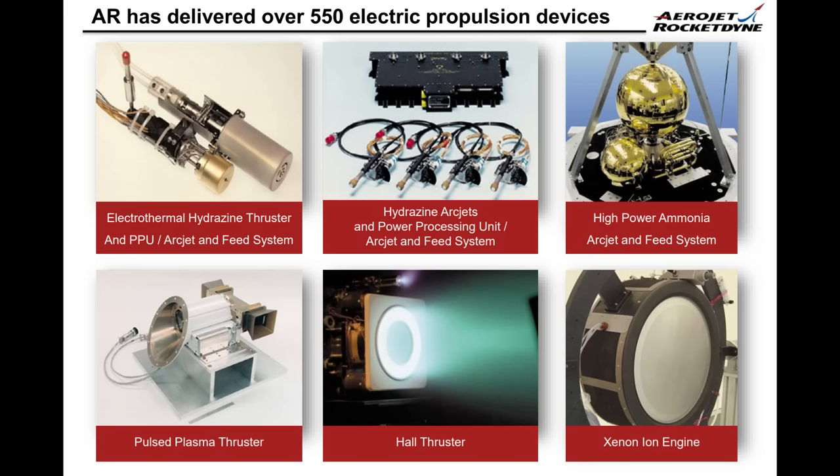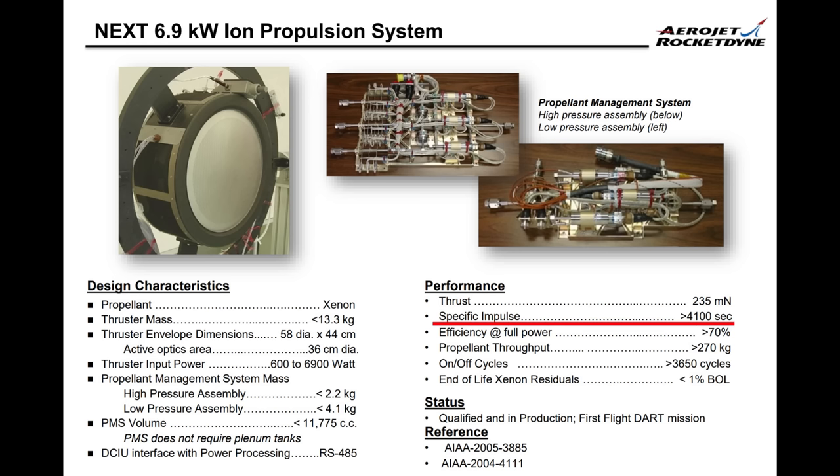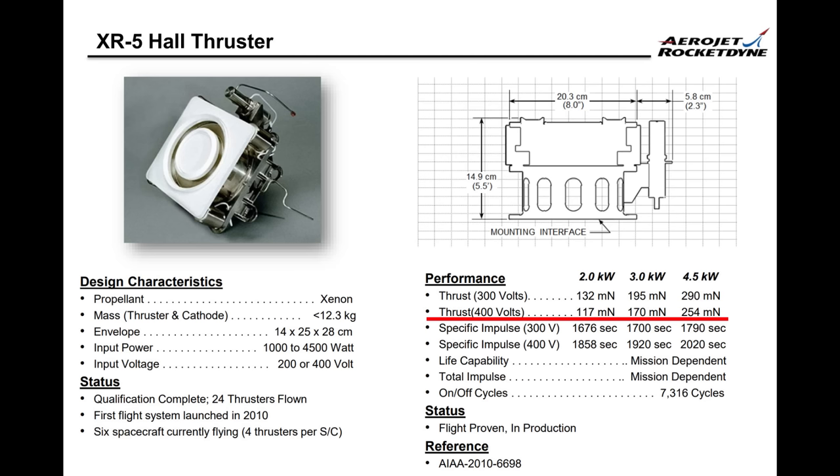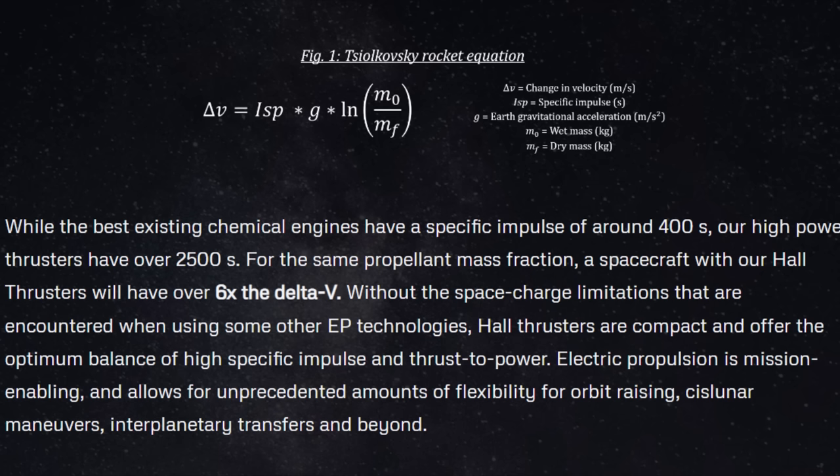The two designs have different performance characteristics, so they actually complement each other quite well. The gridded ion thrusters get better specific impulse, while the Hall Effect thrusters get higher thrust. So the choice of propulsion technology really depends upon the mission requirements.